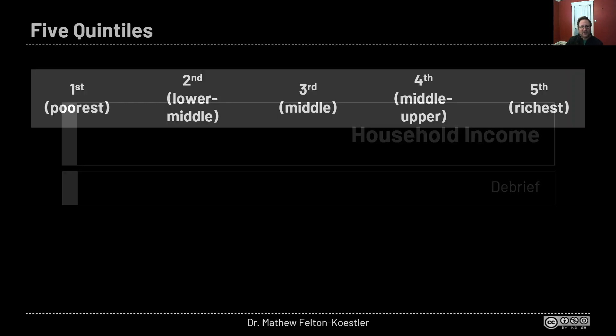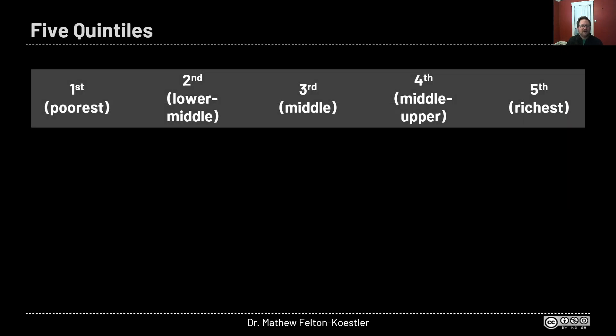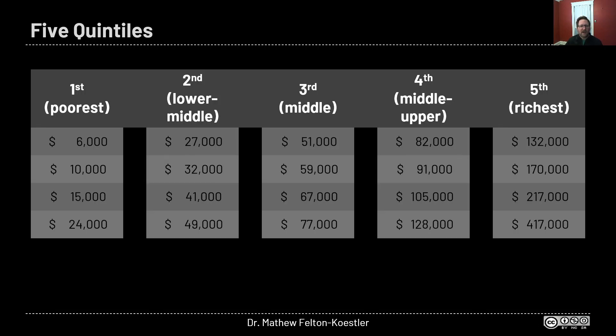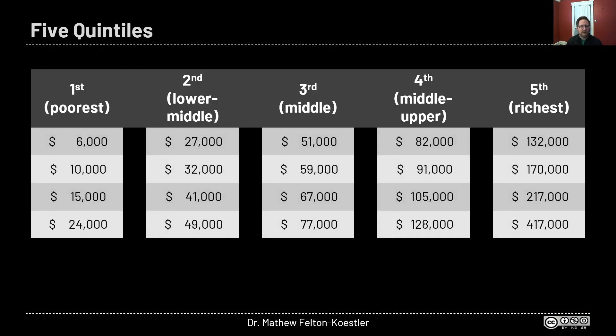Hi, it's Matthew. I want to do a debrief of some of the big ideas in the household income activity that you did on Desmos. As a reminder, we had five different quintiles and each one had four households in it, and here's how much those households made.